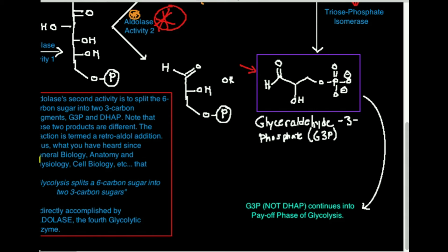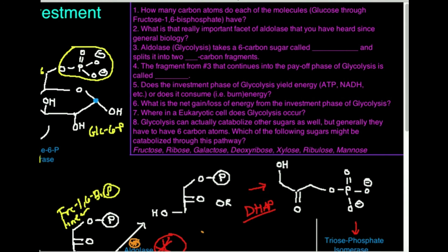Before we conclude this video, it's really important to look at some test-type questions. Number one: how many carbon atoms do each of the molecules from glucose through fructose-1,6-bisphosphate have? That's all the enzymes prior to aldolase — aldolase is the splitting enzyme. Those all have six carbons. Number two: what is that really important facet of aldolase that you've heard about since GenBio? Aldolase directly is the enzyme that splits the six-carbon sugar — in this case glucose — into two three-carbon fragments that happen to be different from each other.